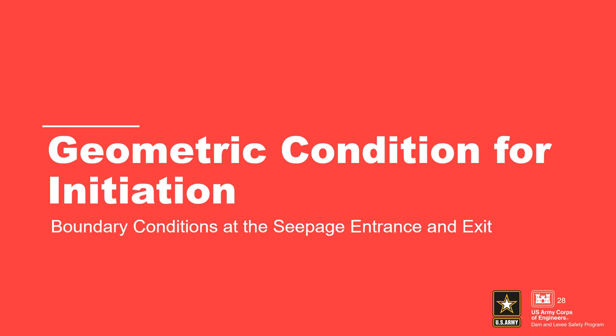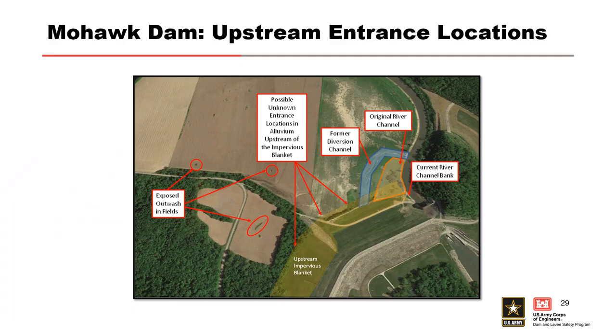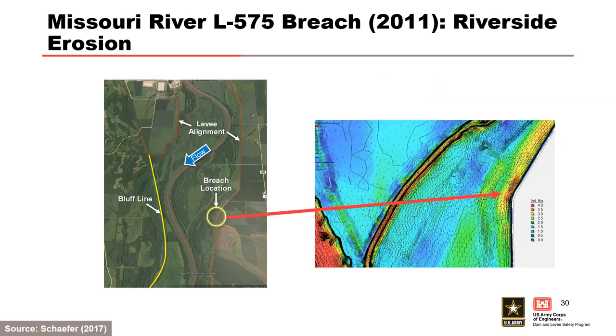Assessing the seepage path length requires understanding the upstream (water side) and downstream (land side) boundary conditions. In a plan view of Mohawk Dam, the team identified various defects in the alluvial top stratum as potential upstream seepage entrance locations used to evaluate various seepage paths. Vegetation in the floodway — naturally occurring or planted in riverside borrow areas — can constrict and concentrate flow along the levee alignment, leading to riverside scour of the top stratum and levee embankment, directly connecting the foundation sand to the river and shortening the seepage pathway.